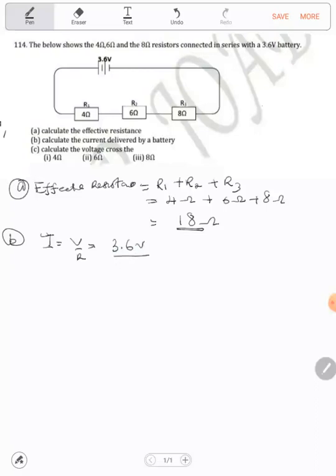So the voltage is 3.6 volts over the resistance, which we know is 18 ohms. So 3.6 divided by 18 gives us 0.2. The units for current are amperes, symbol A.